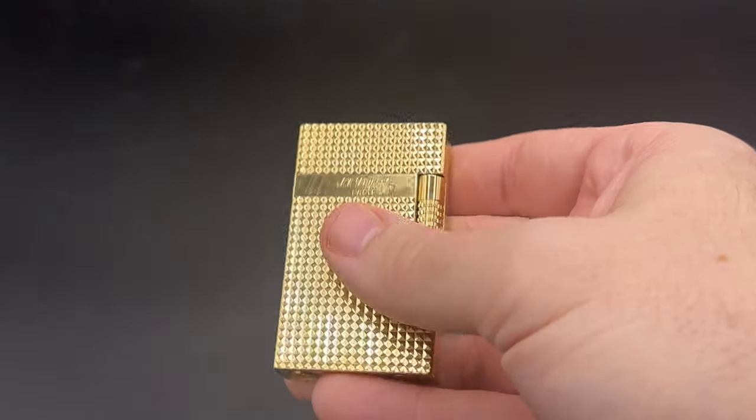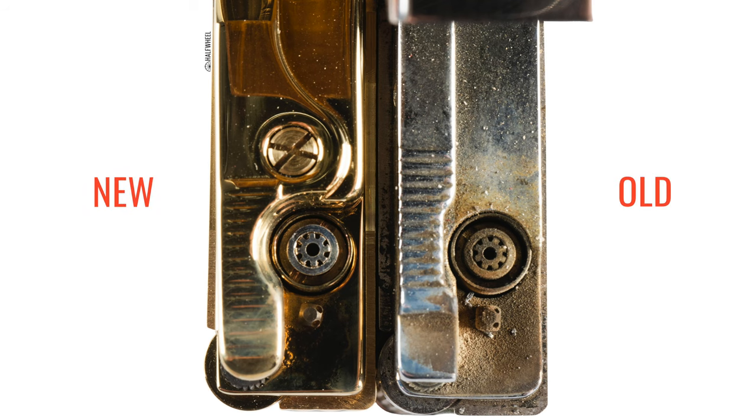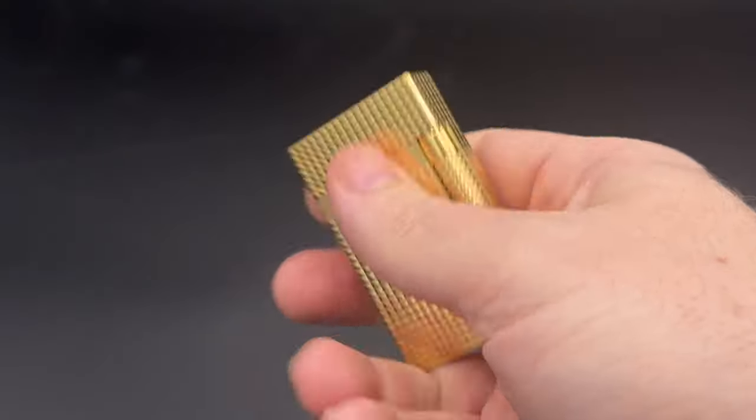There are also some changes with the lid, the size, and the weight of the lighters, as well as the flame mechanism and the flint cover under here. Those, though, are a bit more nuanced and hard to show off here.